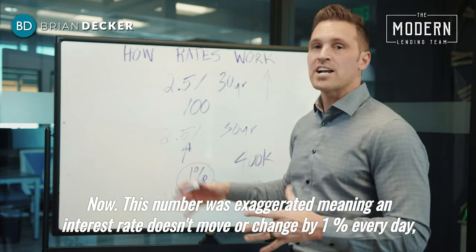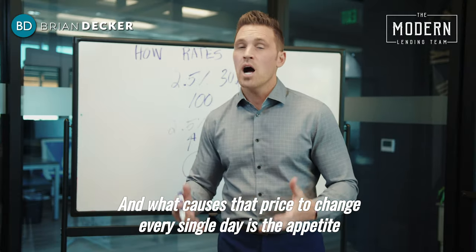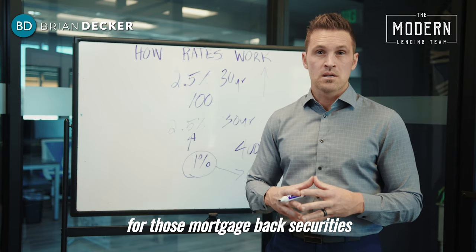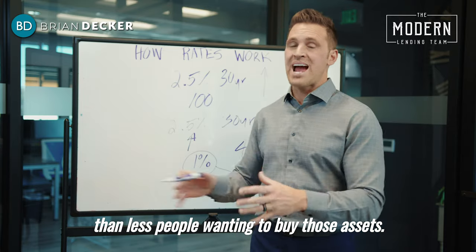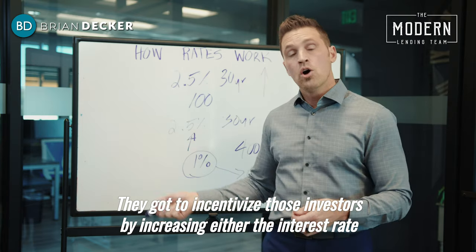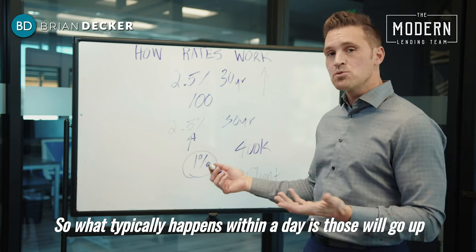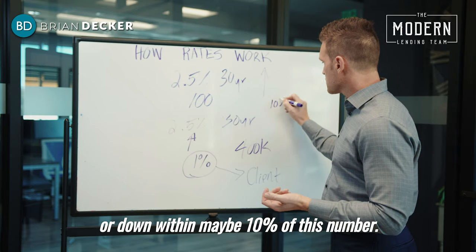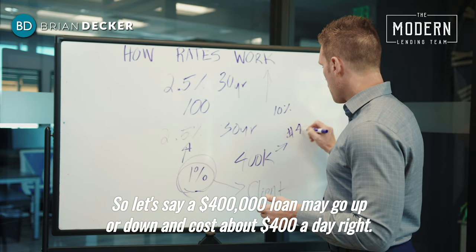This number was exaggerated — an interest rate doesn't change by a 1% fee every day, but it does change every day. What causes that price to change is the appetite for those mortgage-backed securities and the buyers. What typically happens within a day is those prices go up or down within maybe 10% of that number. So on a $400,000 loan, the cost might go up or down about $400 a day.